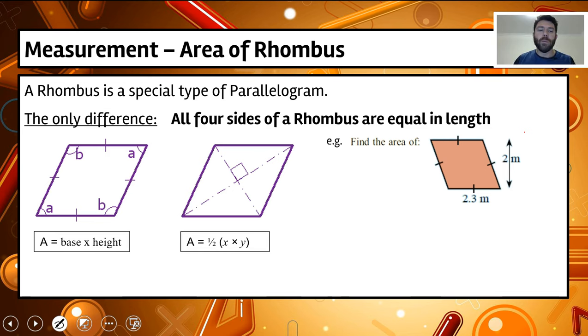The next shape we've got is a rhombus here. Now a rhombus is basically a special type of parallelogram. It's a parallelogram where all four sides are actually equal in length. So another example of a rhombus is a square, like how a rectangle is a parallelogram. A square is a rhombus.